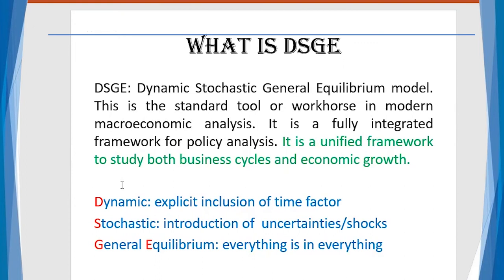The acronym DSGE is formed from four letters: Dynamic, meaning the explicit inclusion of the time factor; Stochastic, meaning the introduction of uncertainties or shocks — this is very important for DGE modeling; and GE stands for General Equilibrium, meaning everything is interconnected — if you touch one aspect of the economy, it reverberates into other parts.